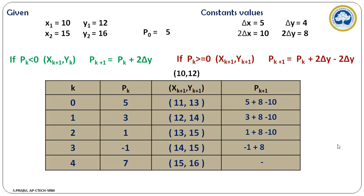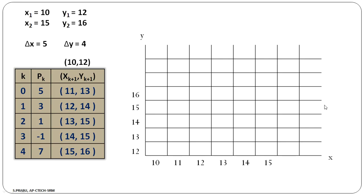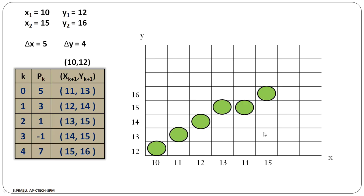We need to do one more step. By collecting these values, we can draw the calculated pixels on a graph. Draw a rough graph at the end of your answer and mark x coordinate values from the lower to higher value. Draw the y coordinate values from lower to higher value. Then first mark the pixel at the starting point (10, 12), then mark the dots as per the calculated pixels: (11, 13), (12, 14), (13, 15), (14, 15), and finally (15, 16). After plotting these pixels, you should draw this diagram to get good marks in your examination.